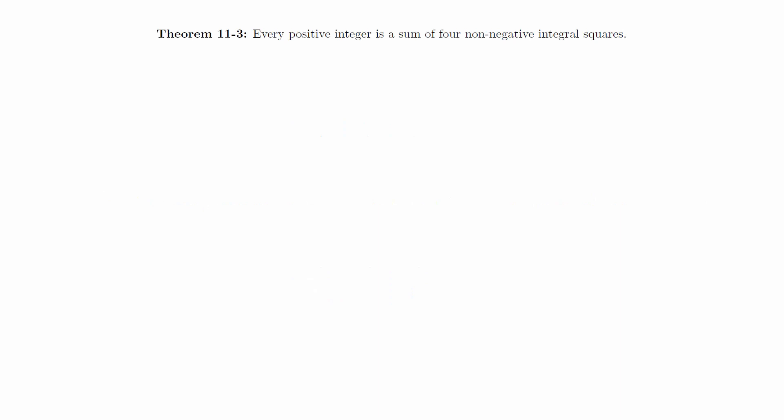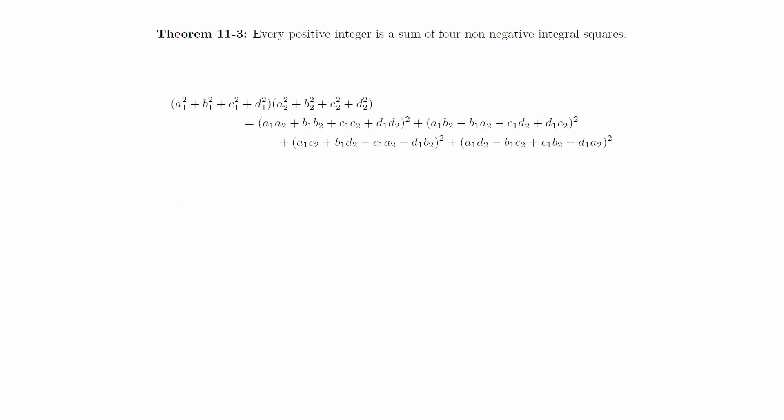Theorem. Every positive integer is a sum of four non-negative integral squares. First, notice that this mathematical identity proves that the product of two sums of four squares can be written as the sum of four squares. This means that we only need to prove that all primes can be written as the sum of four squares because we can build up all other natural numbers from the primes. We can use the result of the previous section to prove that two and one modulo four primes can be expressed as the sum of four squares, since they can be expressed as the sum of just two squares. However, the proof that we would use for three mod four primes works for all primes, so we will do them all in one step.